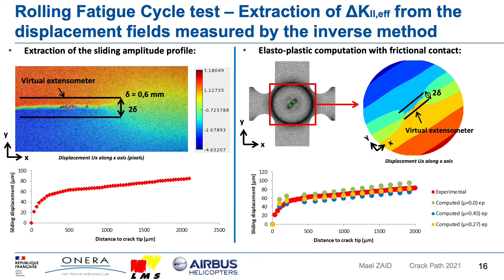With a friction coefficient μ equal to 0.45, the sliding displacement is underestimated. Consequently, both effects — plasticity and frictional contact between the crack lips — must be combined and taken into account to reproduce the experimental crack sliding displacement. Finally, with an apparent friction coefficient of 0.27, we are able to find exactly the same sliding displacement profile. This friction coefficient allows taking into account all the physical phenomena that occur between the crack lips at a given time, and we are now able to calculate the effective stress intensity factor.